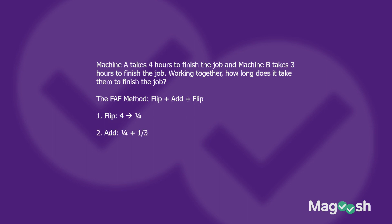Next, add one-fourth plus one-third. We want to add up the reciprocals of both rates. Four hours corresponds to one-fourth for Machine A, and for Machine B we flip three to get the reciprocal, one-third. Once I've done that with both rates I add them together, and this gives me seven over twelve.